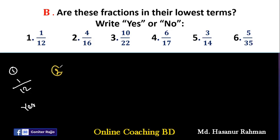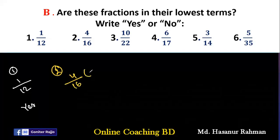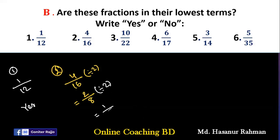Number 2: we can easily say 4/16. We can divide 4 and 16 both by 2, giving 2/8. Again, we can convert it to a lower term by dividing 2 and 8 by 2, giving 1/4. So 1/4 is the lowest term of 4/16. Then number 2 answer will be no.